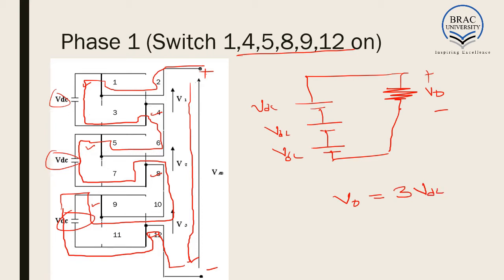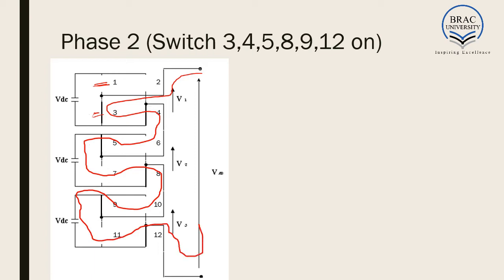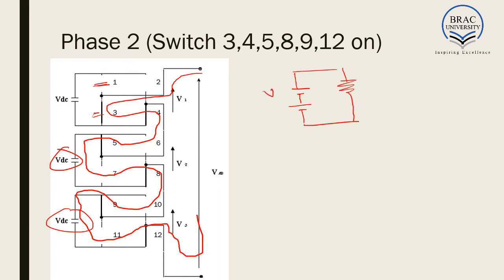The output voltage in this case with three voltage sources in series is 3VDC. In the next phase, all the switching combinations remain the same except switch 1 is open and another switch is closed. No current flows through the top VDC source; we have two VDC sources in series connected to the output. Therefore, V output is equal to 2VDC in the second phase.